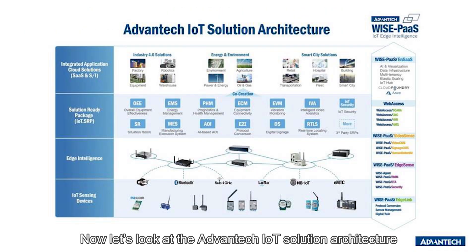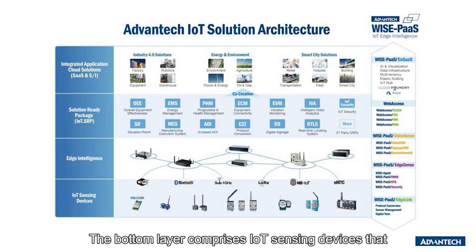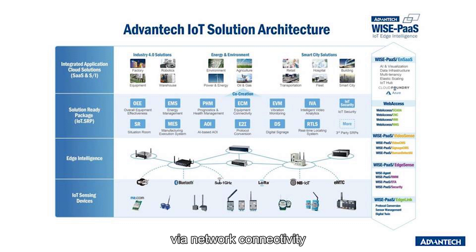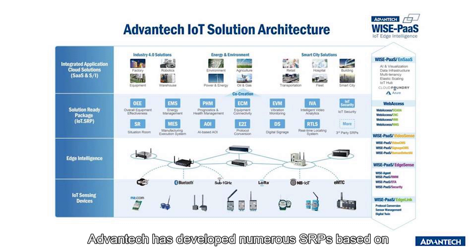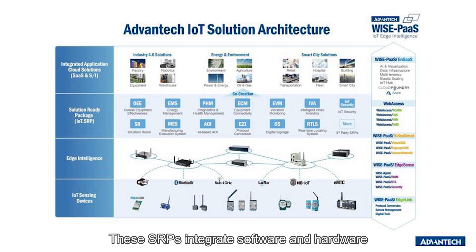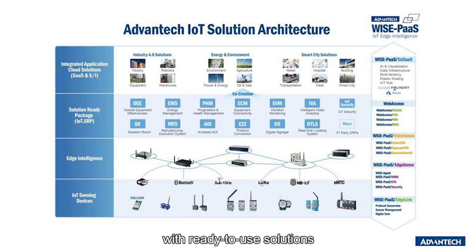Now let's look at the Advantech IoT solution architecture. The bottom layer comprises IoT sensing devices that collect and transmit data to edge intelligence platforms via network connectivity. Advantech has developed numerous SRPs based on the WisePass platform. These SRPs integrate software and hardware and can be quickly replicated, allowing system integrators to provide end customers with ready-to-use solutions.